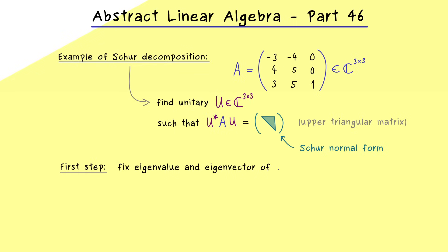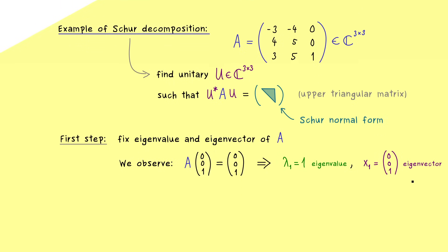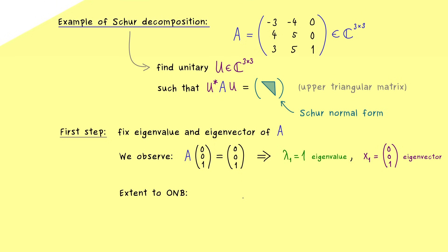In the first step we fix an eigenvalue and an eigenvector of our matrix A. It's easy to see that if we apply the vector (0,0,1) to the matrix A, we get out the third column, which is the same vector. This means it's an eigenvector associated to the eigenvalue 1. So we call the eigenvalue λ1 and the eigenvector x1, and it's important that we normalize it to length 1, which is already the case here.